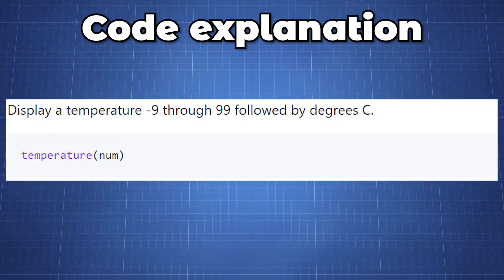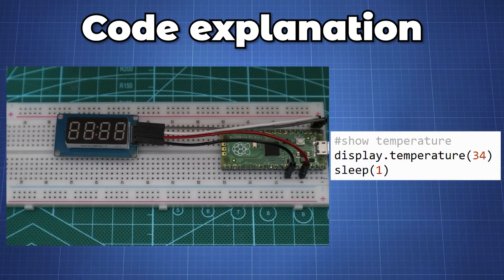The next method we will look at is the temperature method which allows us to display a temperature from negative 9 through 99 followed by degrees Celsius. For example in this block of code we will display 34 degrees Celsius.